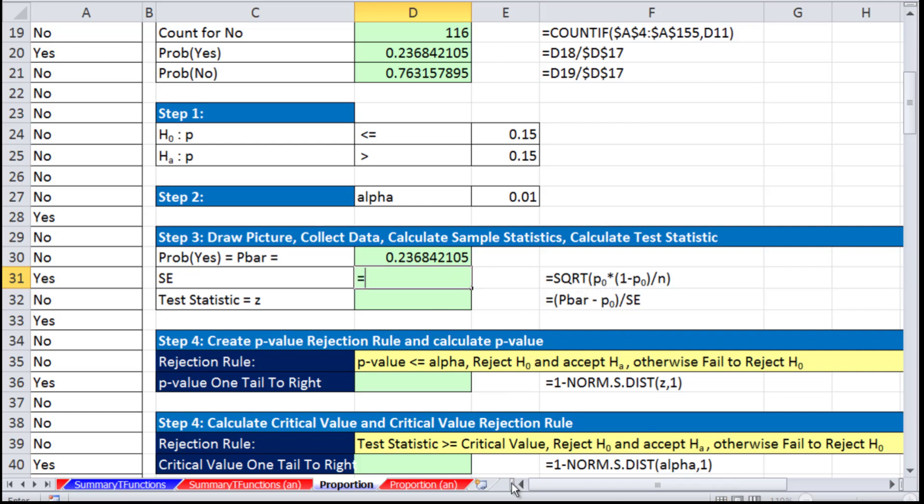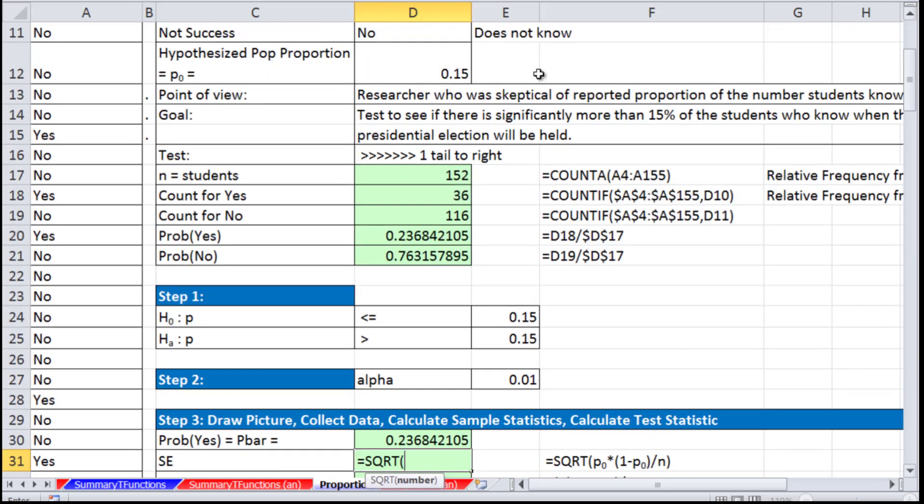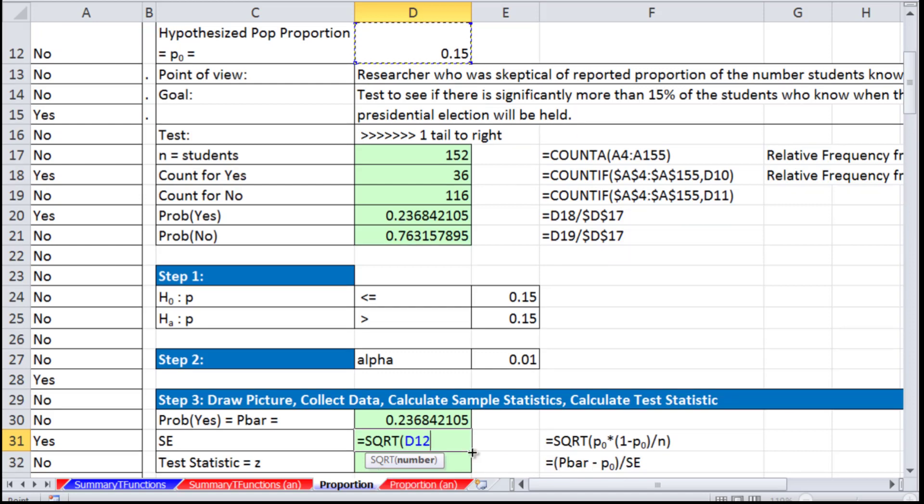Square root, and we're going to take our—actually want to go up and get it from our source right here. P times 1 minus P, then divide by n, close parentheses. Our standard error is 0.0289.